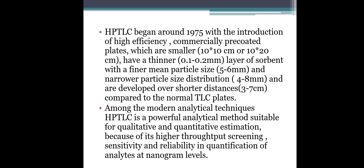HPTLC began around 1975 with the introduction of high efficiency commercially precoated plates which are smaller — 10×10 cm or 10×20 cm — and have a thinner layer of sorbent (0.1 to 0.2 mm) with finer mean particle size around 5 to 6 µm, narrower particle size distribution of 4 to 8 µm, and are developed over shorter distances of 3 to 7 cm compared to normal TLC plates.